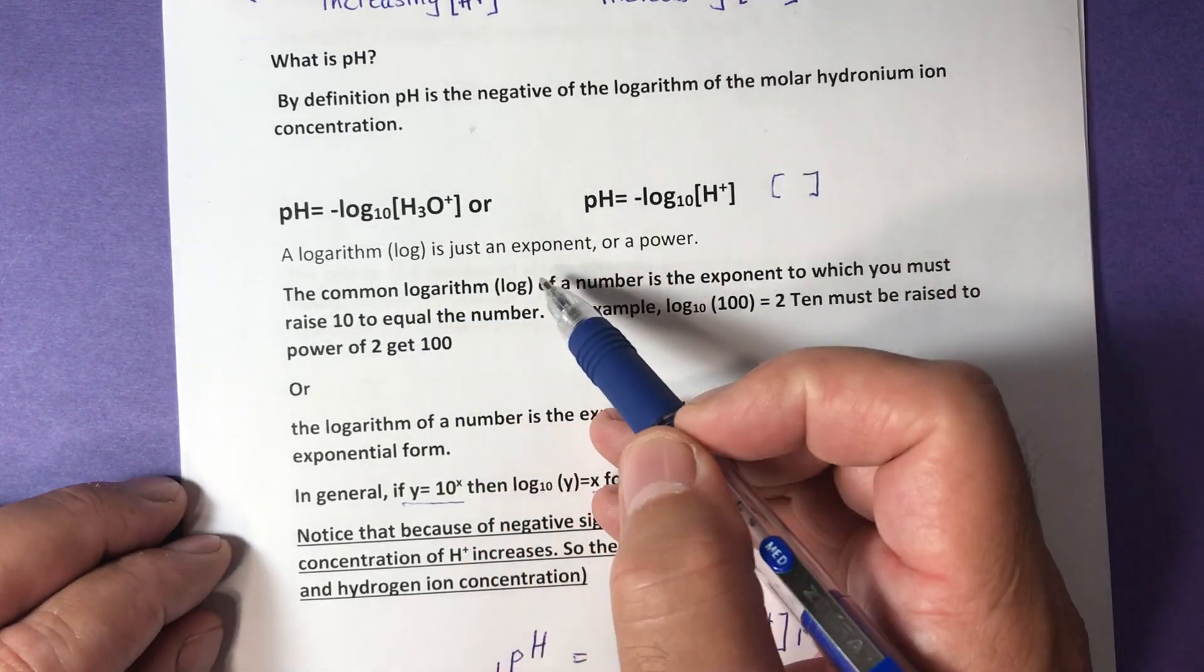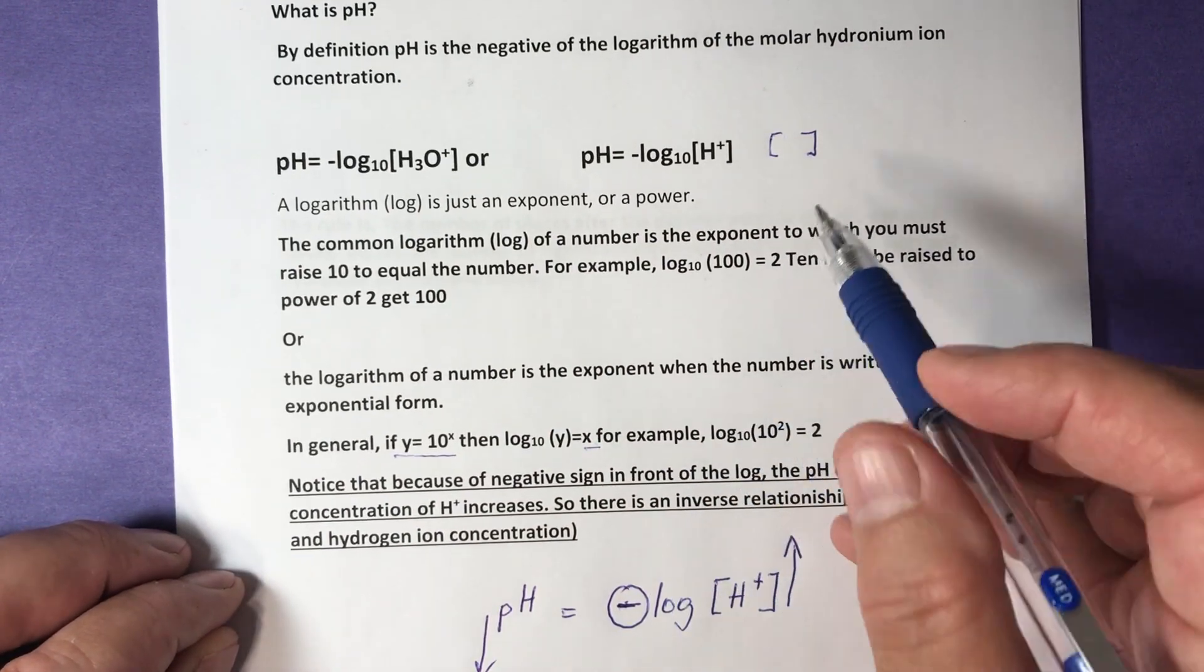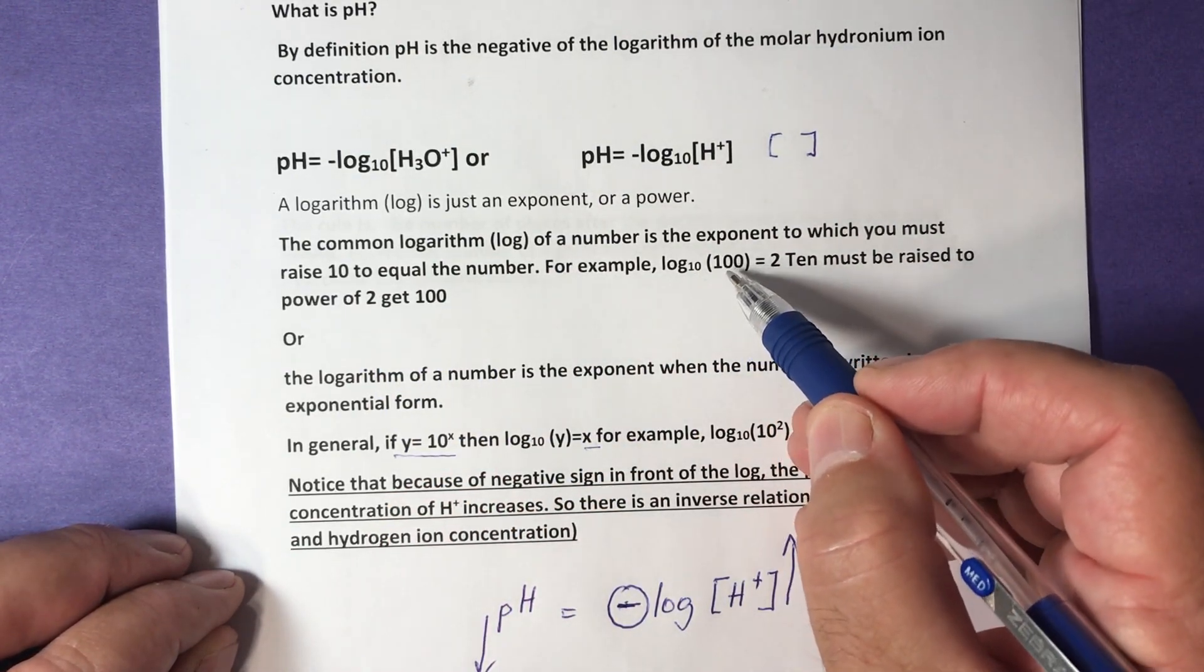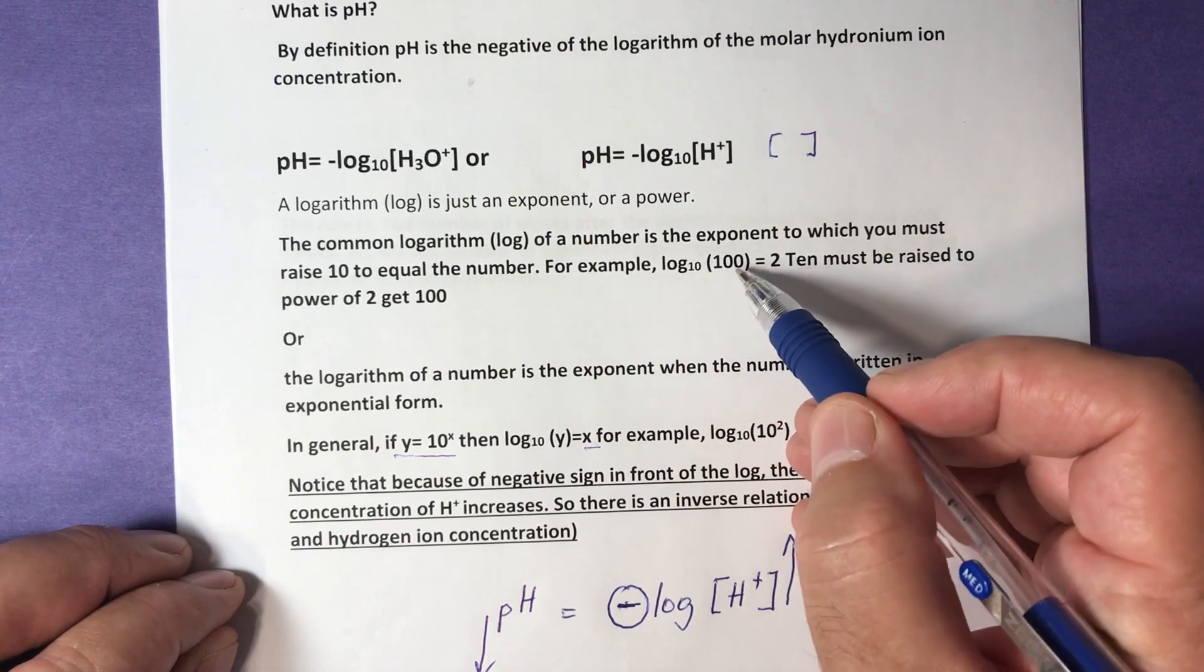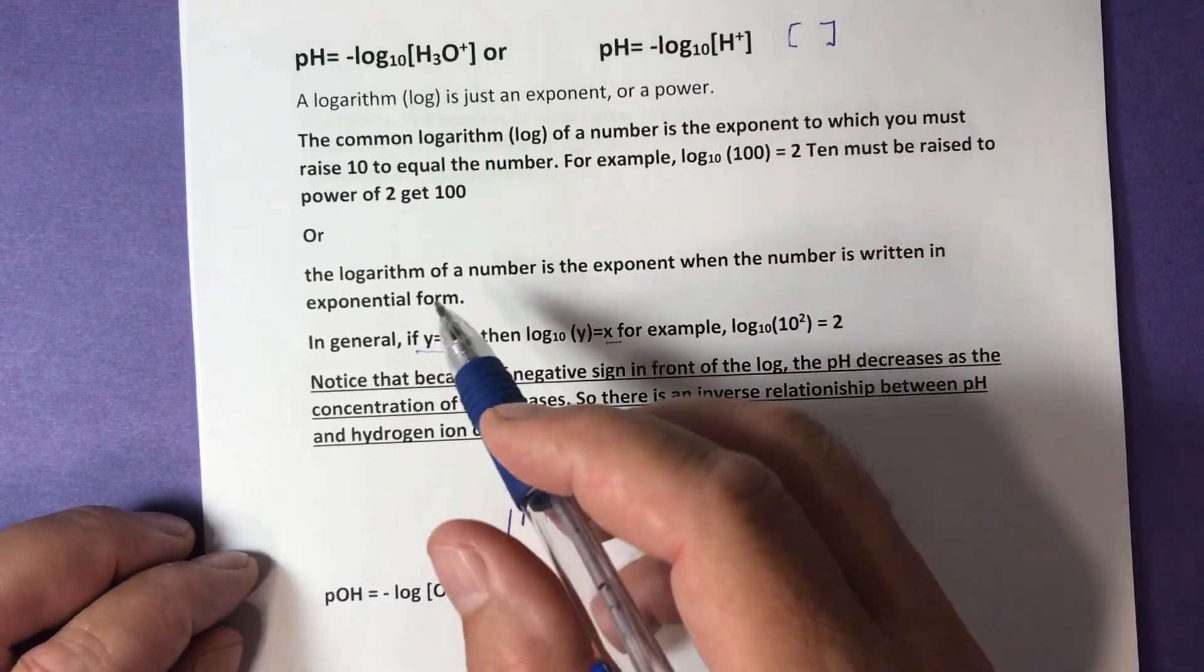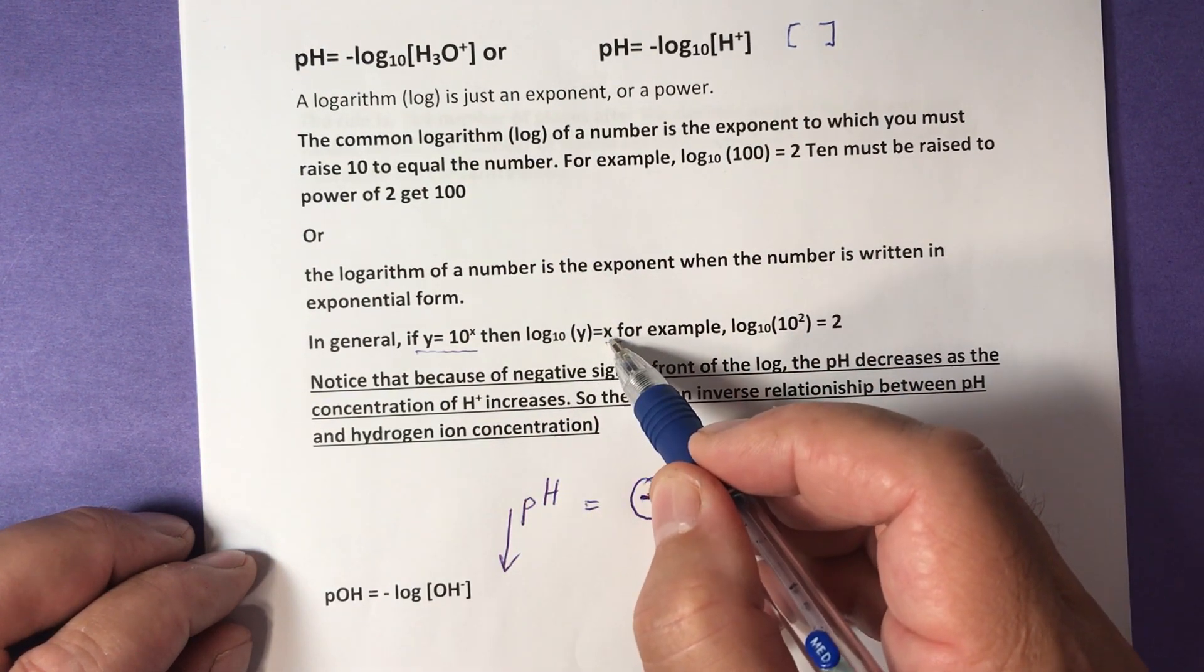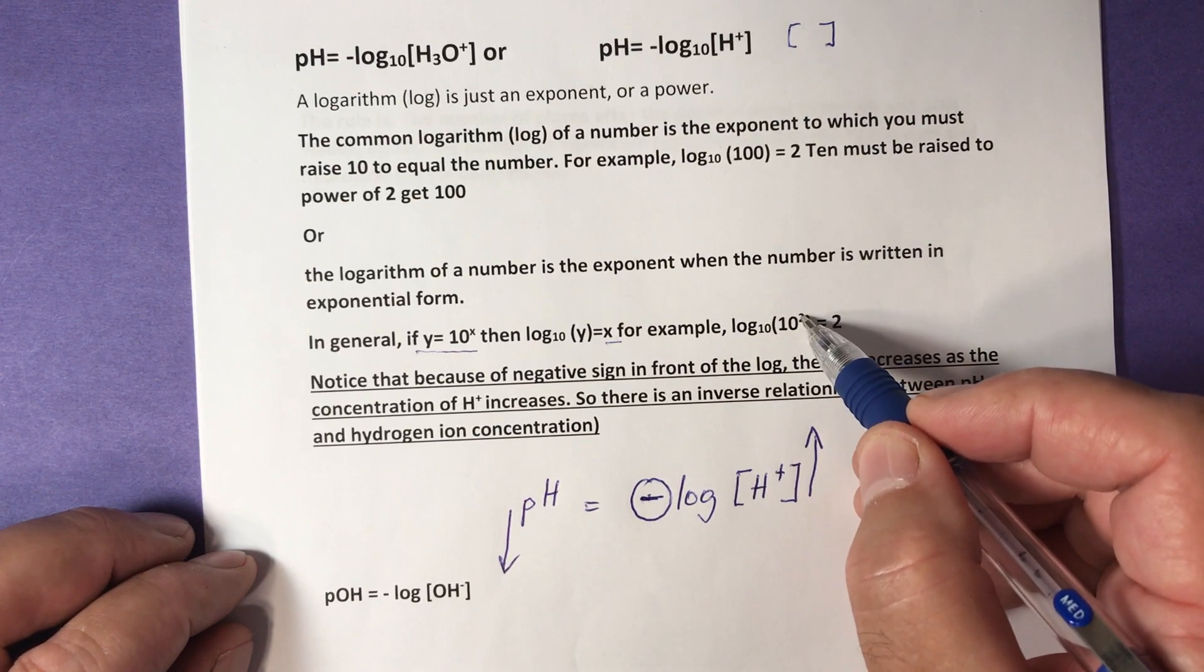A little math background here for the concept. A logarithm, log, is just an exponent or a power. The common log of a number is the exponent to which you must raise 10 to equal the number. For example, log base 10 of 100 is 2 because 10 must be raised to the power of 2 to get 100. In general, if a number is expressed as y equals 10 to the power of x, then log base 10 of y is just x. For example, log base 10 of 10 to the power of 2 is the exponent 2.